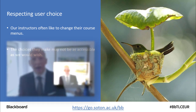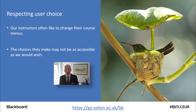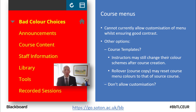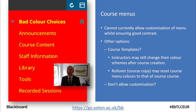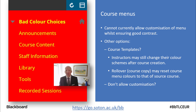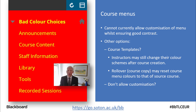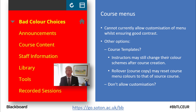Our instructors do like changing their course menu colours, but they might not make accessible choices. So what can we do if instructors make poor quality colour scheme choices? We could use course templates, but unless we stop staff from being able to change their course menu colours they could still change them afterwards. We've also found that when you roll over a course into a new course, the colours of the old course — depending on what you select when using course copy — can be copied over. So how can we enforce colour schemes without stopping customisation entirely?